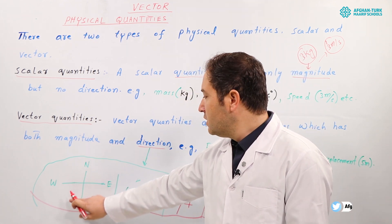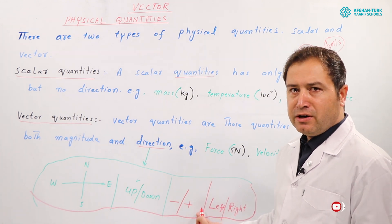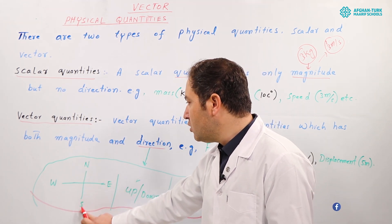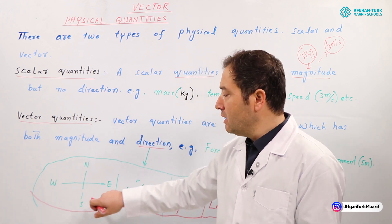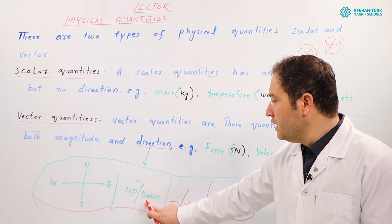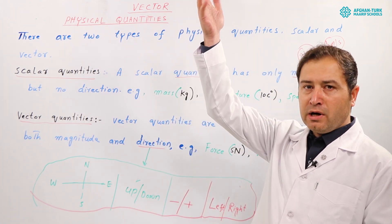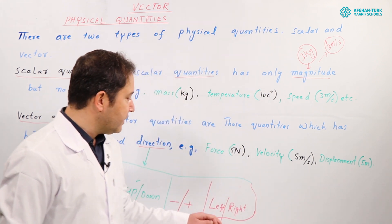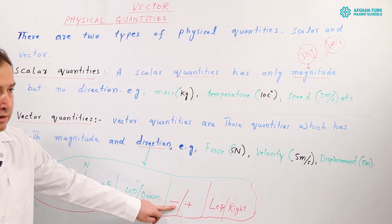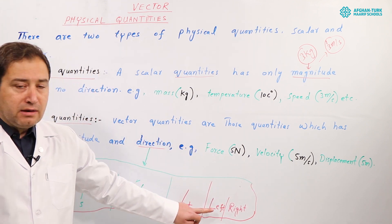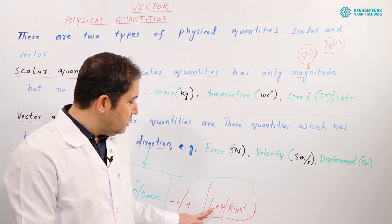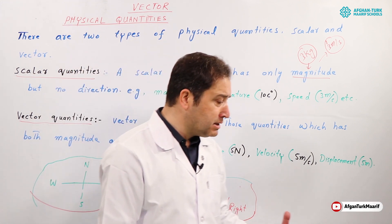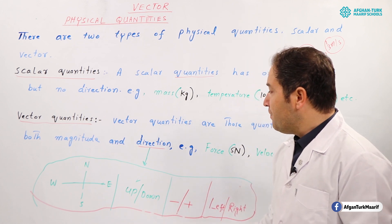In physics, we use the following terms to specify direction. The first one is north, east, south, west. The second term is up and down — like a body moves upward or downward. The third is plus and minus direction — a body moves toward the negative or positive side. The last one is left or right.